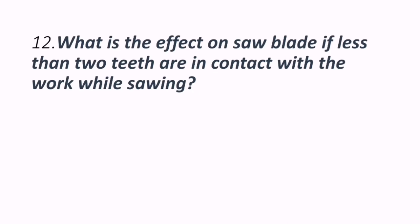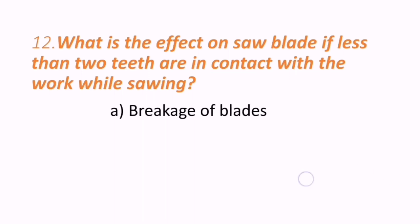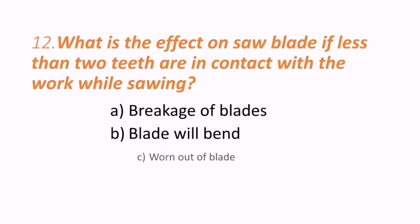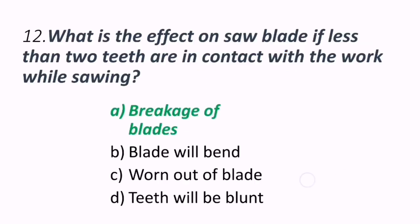Twelfth question: what is the effect on a saw blade if less than two teeth are in contact with the work while sawing? Options are breakage of blades, blade will bend, worn out of blades, or teeth will be blunt. If less than two teeth are in contact, breakage of blades will happen. A is the correct answer.